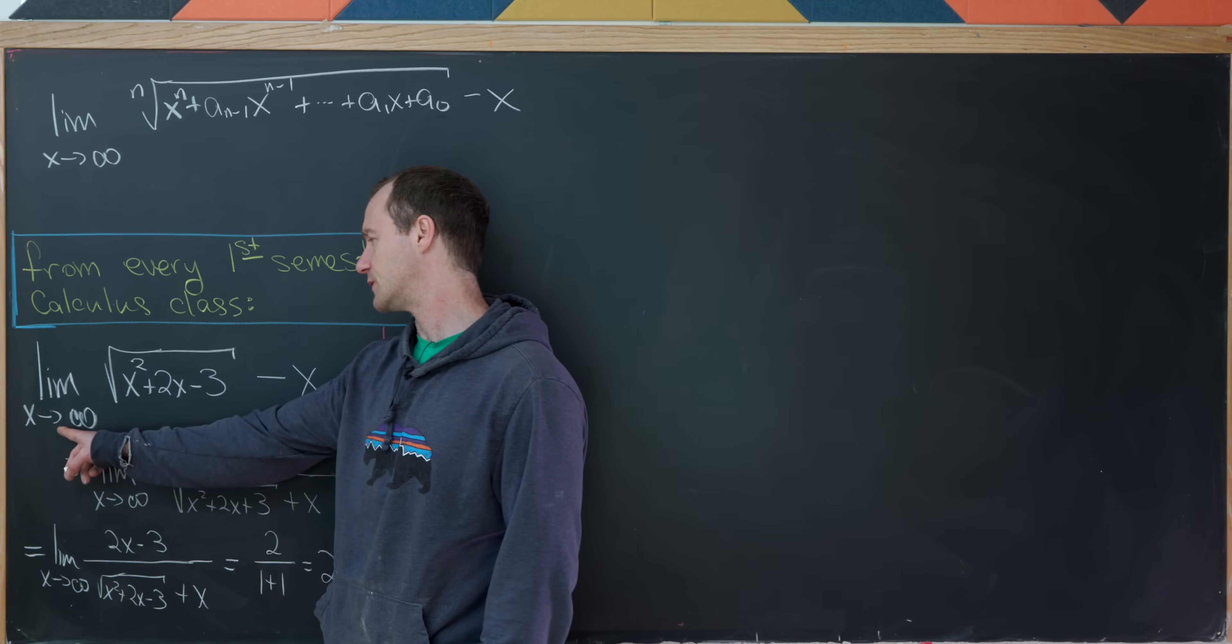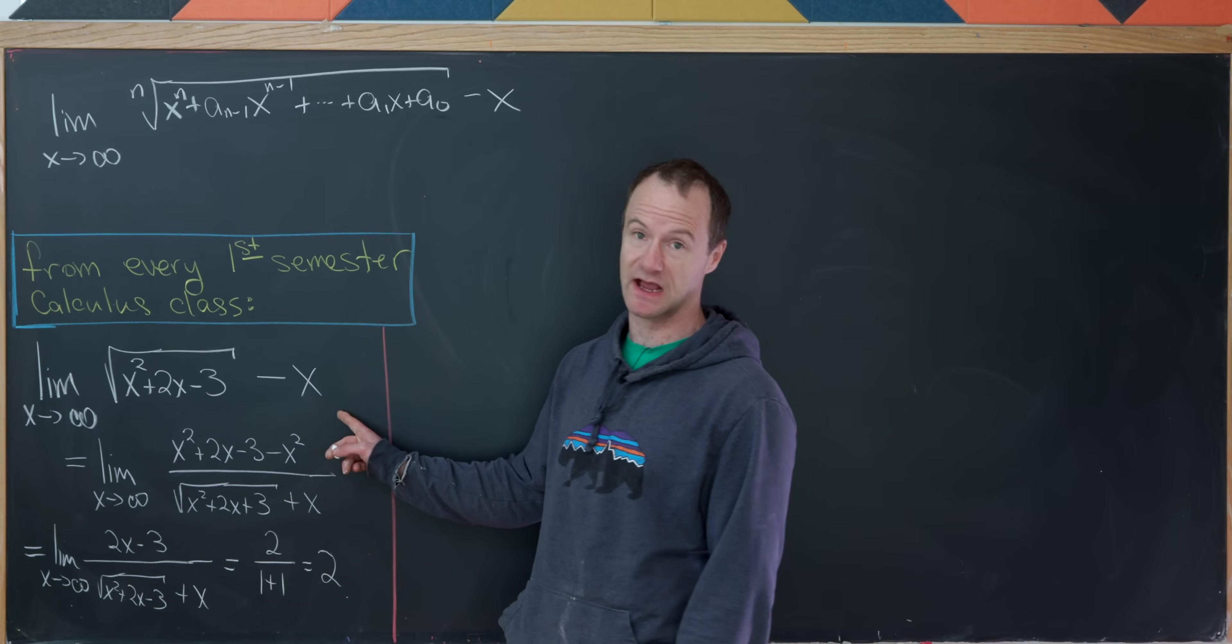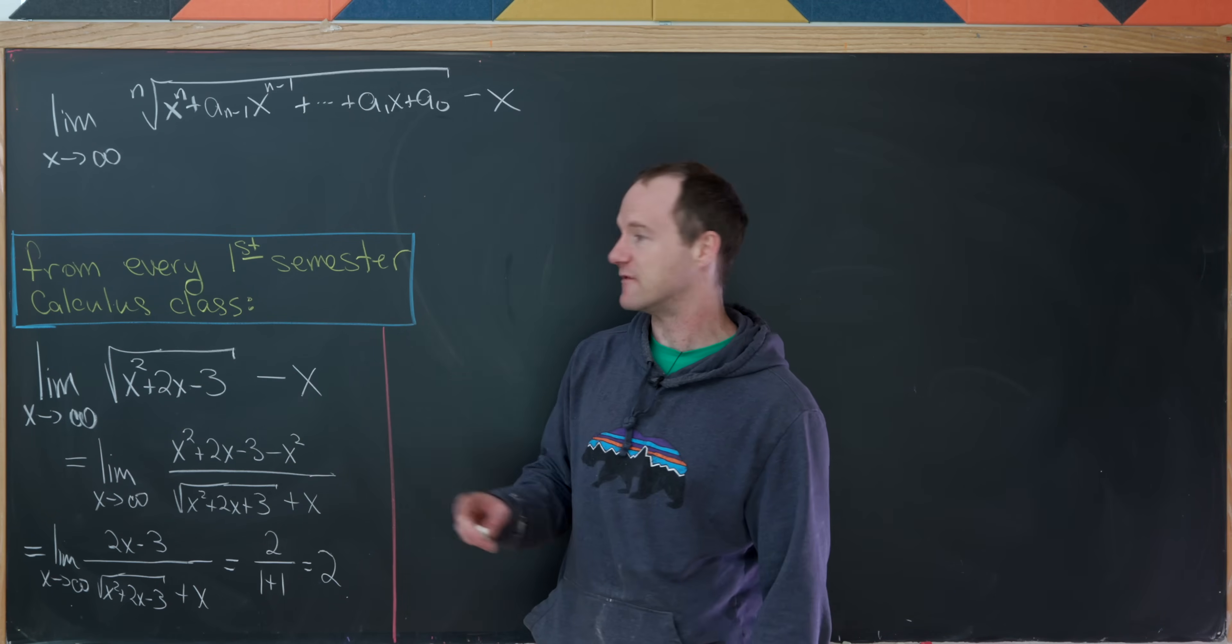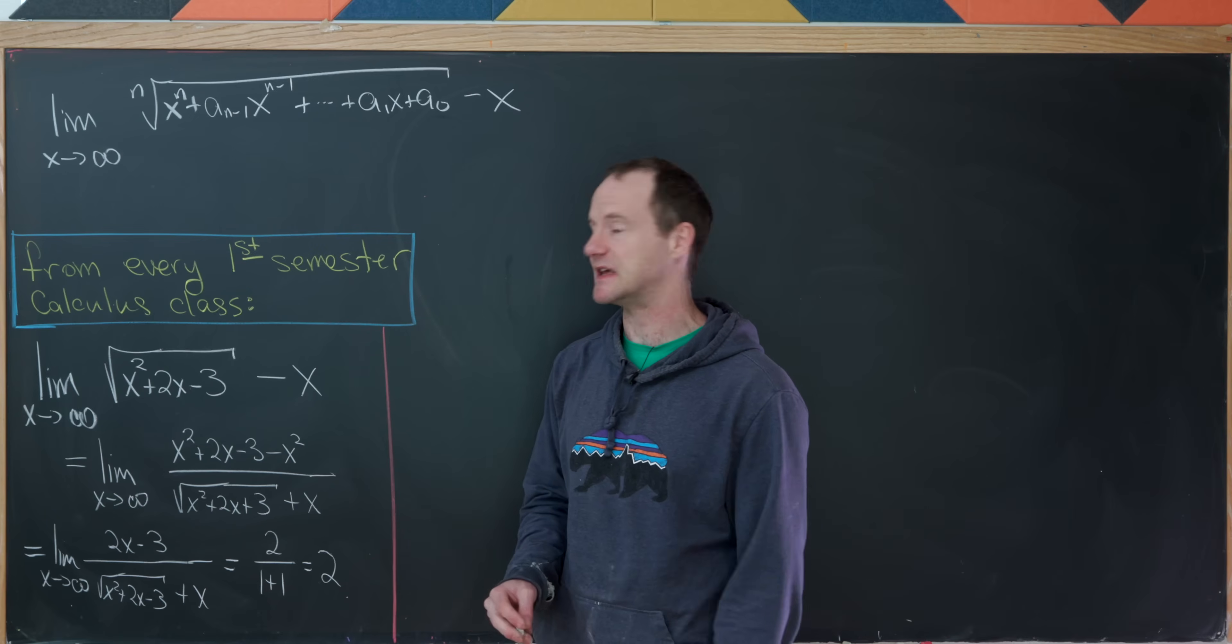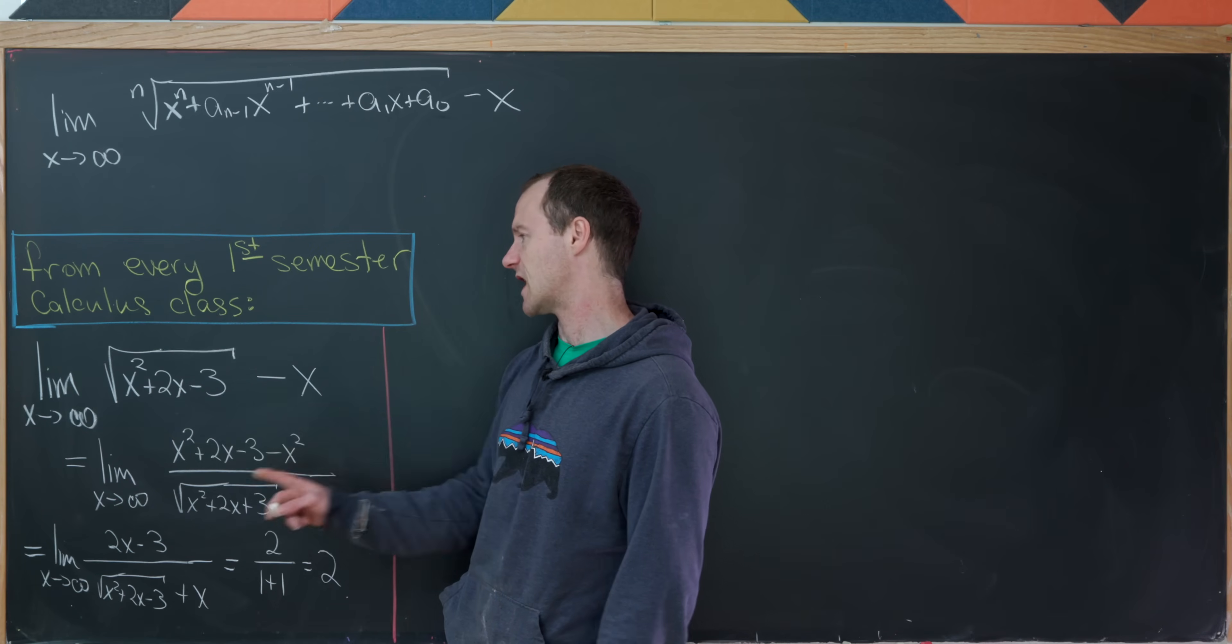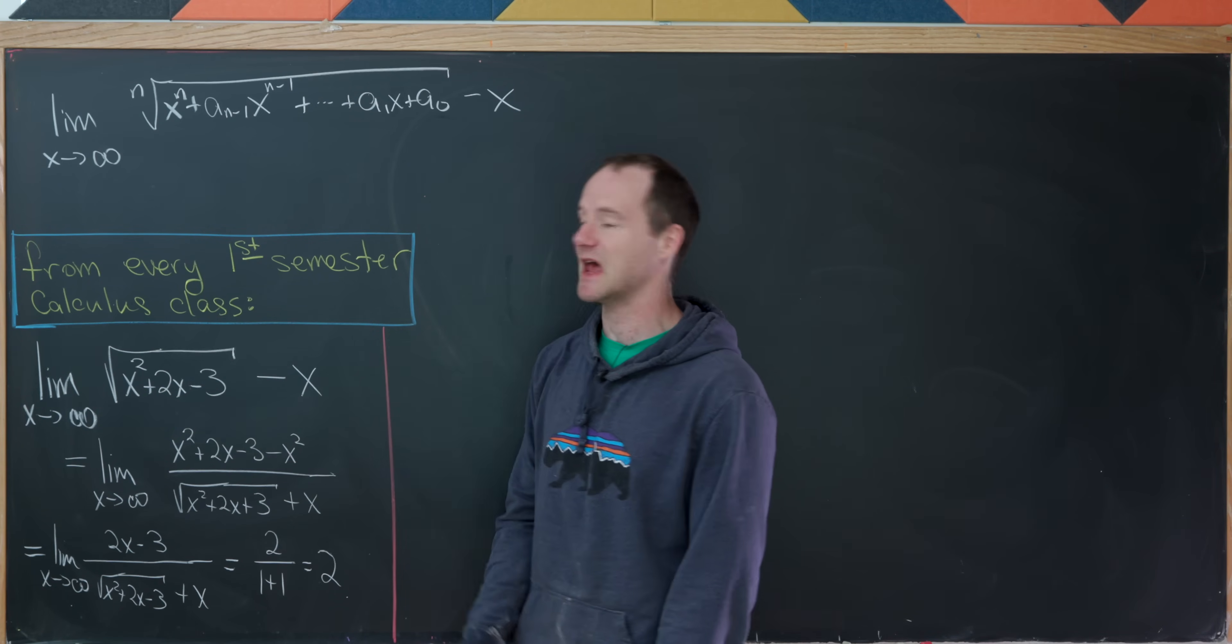limit as x goes to infinity of the square root of x squared plus 2x minus 3 minus x. Of course maybe the exact numbers may vary, but a limit like this is in essentially every first semester calculus class, where by this I mean the square root of a quadratic polynomial minus x.